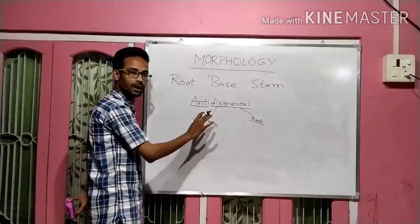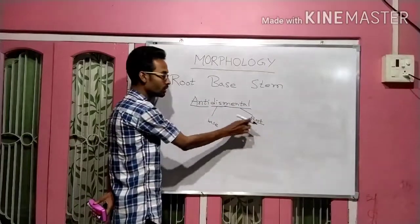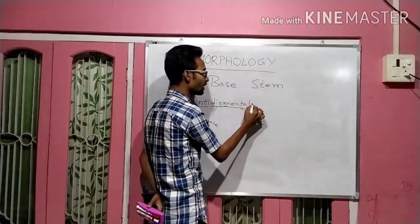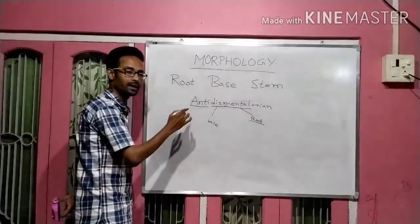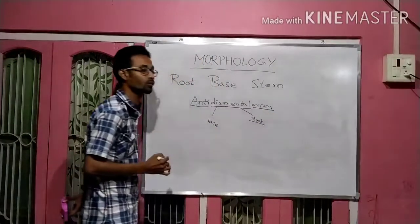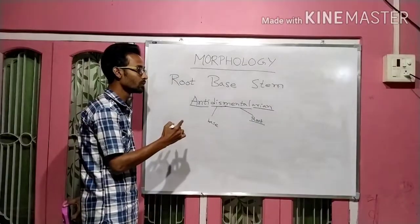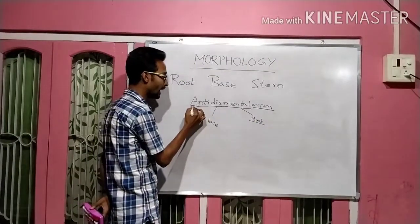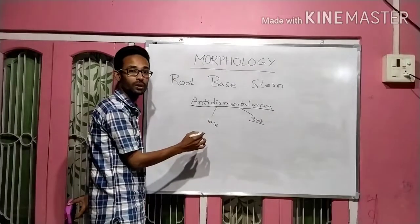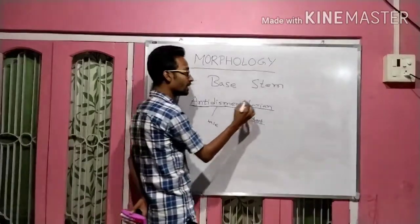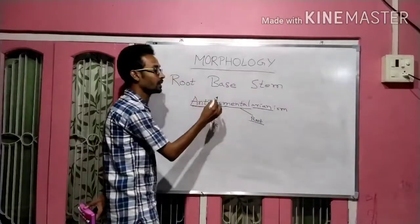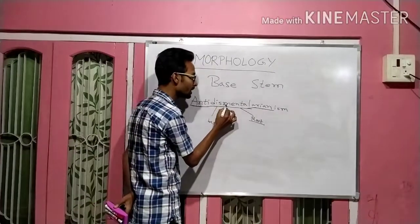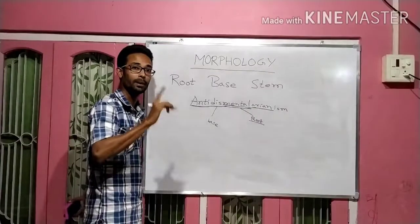In 'antidismantle,' mantle is the root and dismantle is the base. If we extend the word further — 'antidismantlerian' — we have added another morpheme, 'arian.' Now 'antidismantle' will be the base. Again, if we add 'ism' — 'antidismantleism' — 'antidismantle' will be the base. But the root will remain the same. The root will not increase; only the base increases. The root of any word, whatever its length, remains constant.